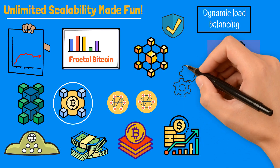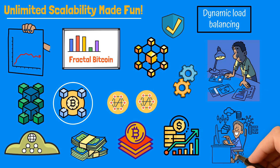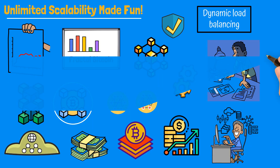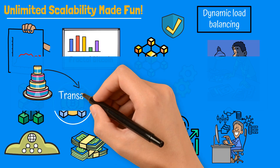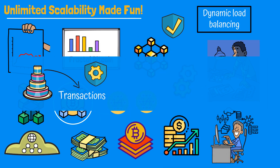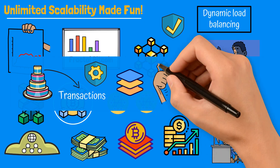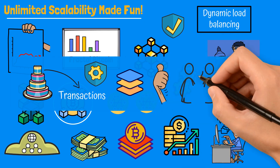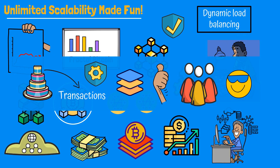Fractal Bitcoin also comes with a feature called dynamic load balancing, which is like a smart party planner that adjusts resources on the fly based on how many guests show up. So even when things get super busy, everything flows seamlessly — just like a cloud computing system that knows how to keep the fun going. Envision Fractal Bitcoin as a beautifully layered cake: each layer holds its own transactions, but they all work together. As more layers are added, the cake becomes more accommodating, allowing everyone to have a slice without overwhelming the original layers.